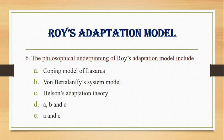Number 6. The philosophical underpinnings of Roy's adaptation model include: A. Coping model of Lazarus, B. Von Bertalanffy system model, C. Helson's adaptation theory, D. A, B and C, E. A and C. Answer: D. A, B and C. Roy's adaptation model was based on Lazarus's coping model, Von Bertalanffy's system model, and Helson's adaptation theory.